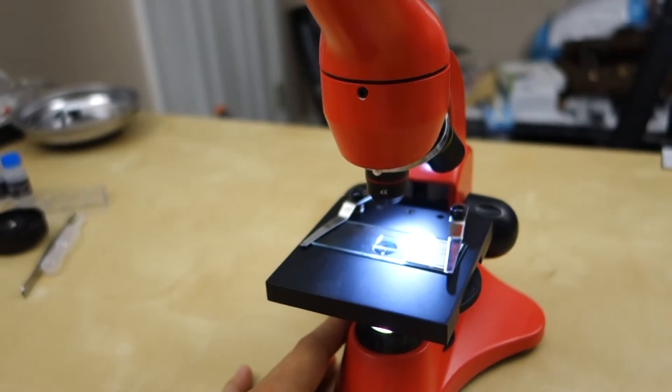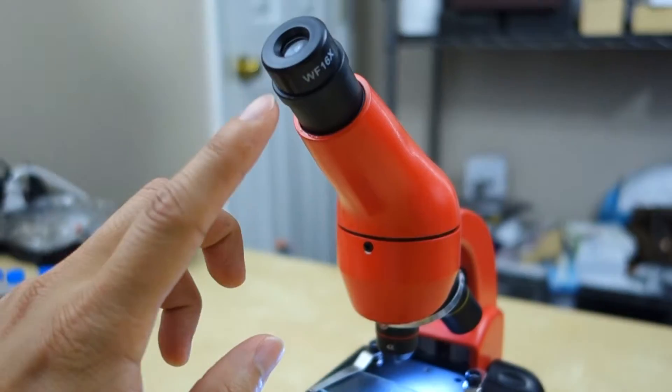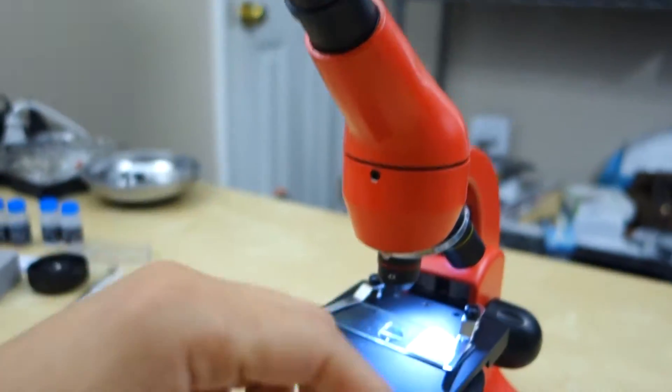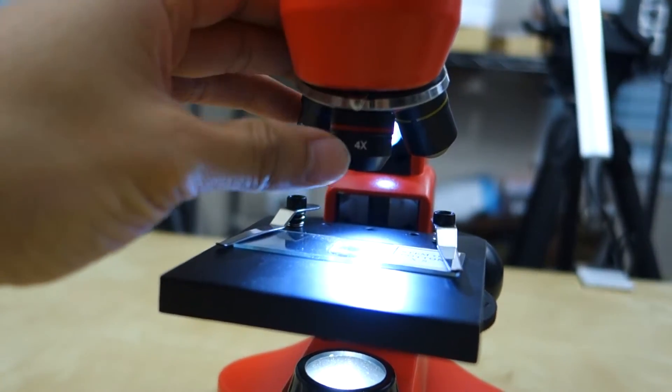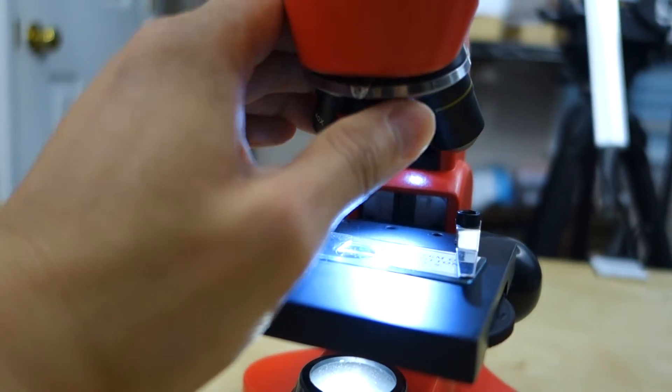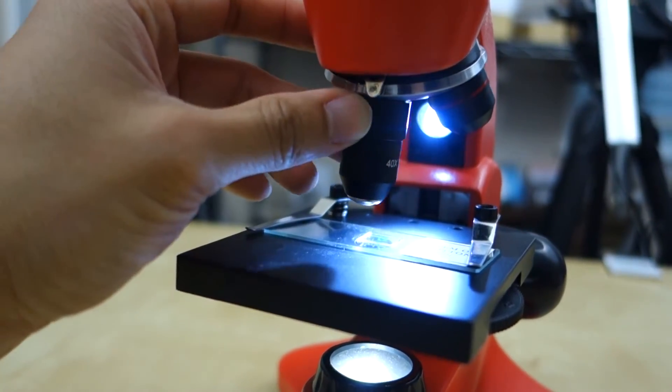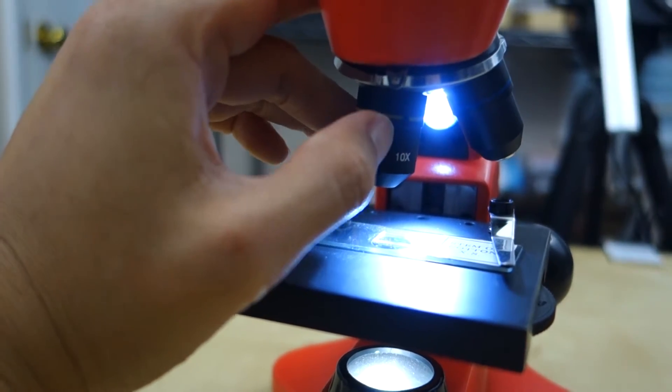So here's the unit as you can see. So you have the eyepiece up here with a barrel. Here you can see it's a 16x eyepiece. So here you have three adjustments. This is 4x. And then you can rotate it this way. 40x. And then again, this is 10x.